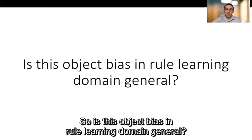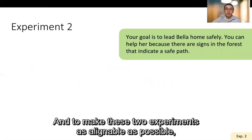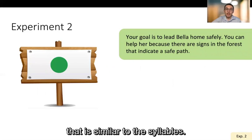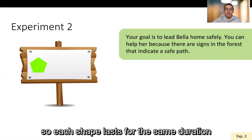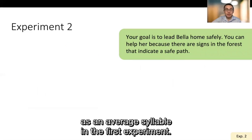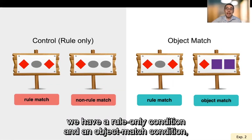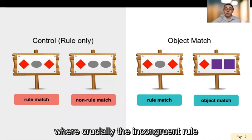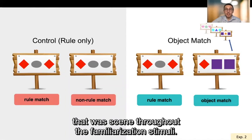So is this object bias and rule learning domain general? To test this, we replicate experiment one, except we use shapes instead of syllables. And to make these two experiments as alignable as possible, we present the shapes in a way that is similar to the syllables. So they appear one at a time and with the same timing. So each shape lasts for the same duration as an average syllable in the first experiment. And like experiment one again, we have a rule only condition and an object match condition where crucially the incongruent rule and the object match condition contains one of the shapes that was seen throughout the familiarization stimuli.